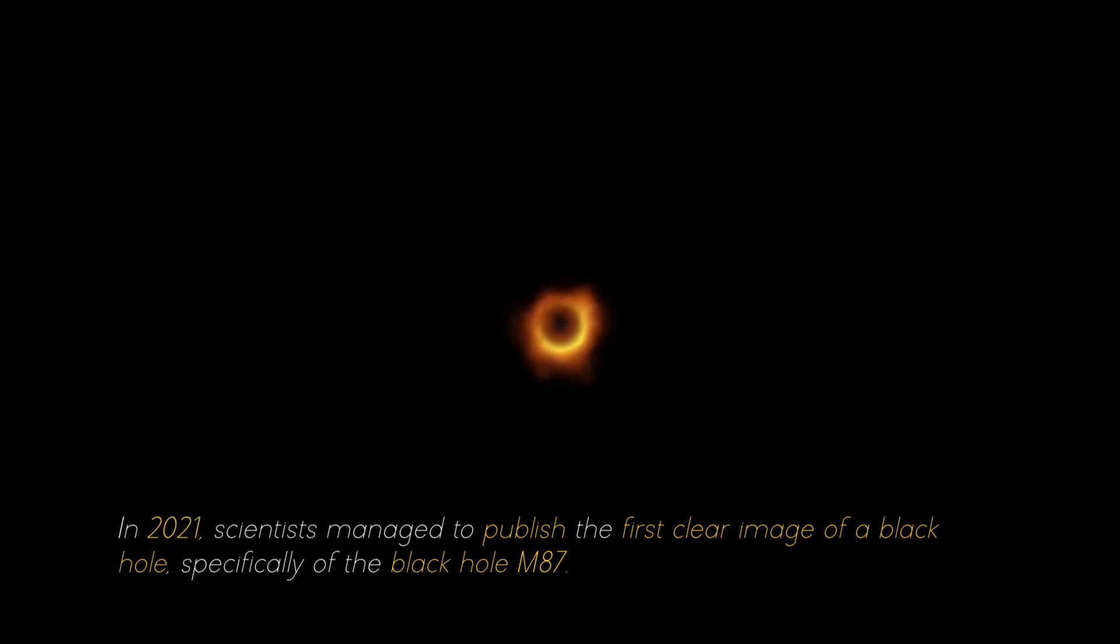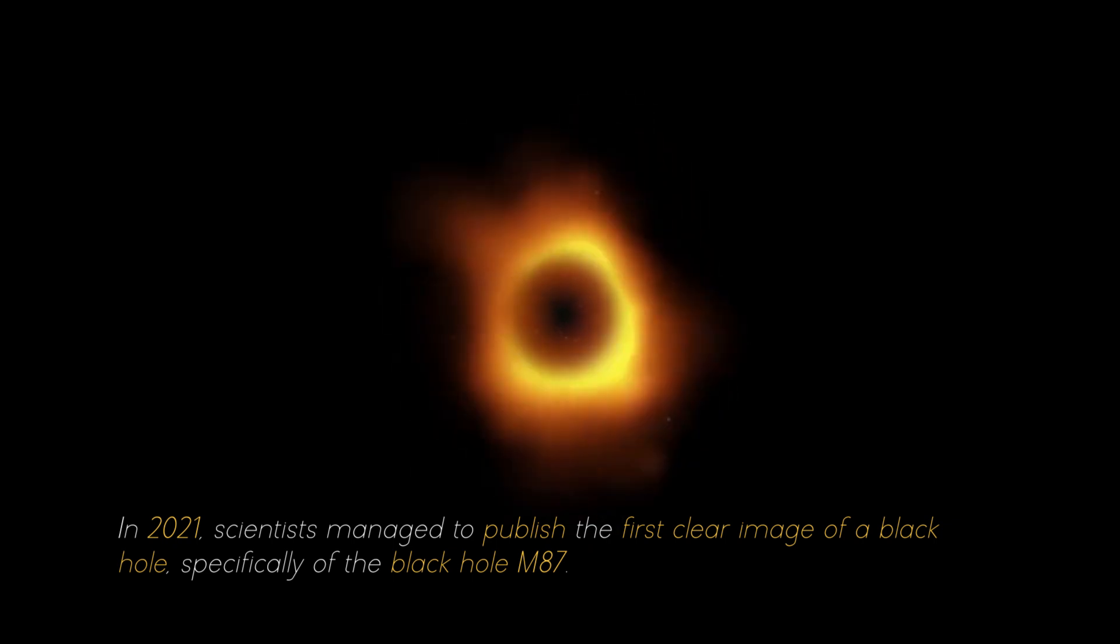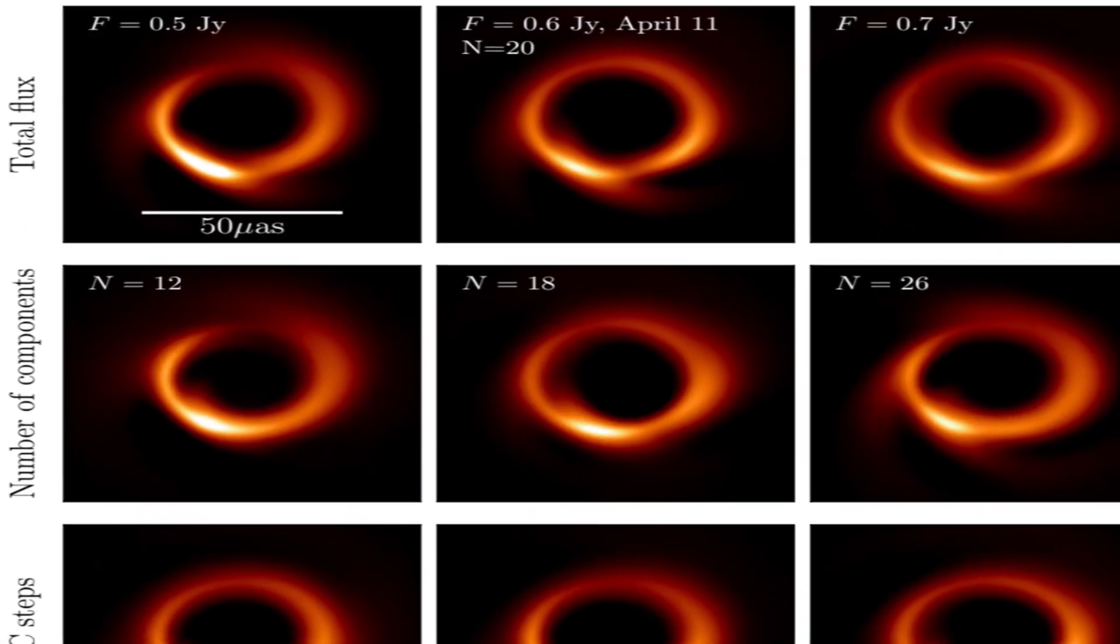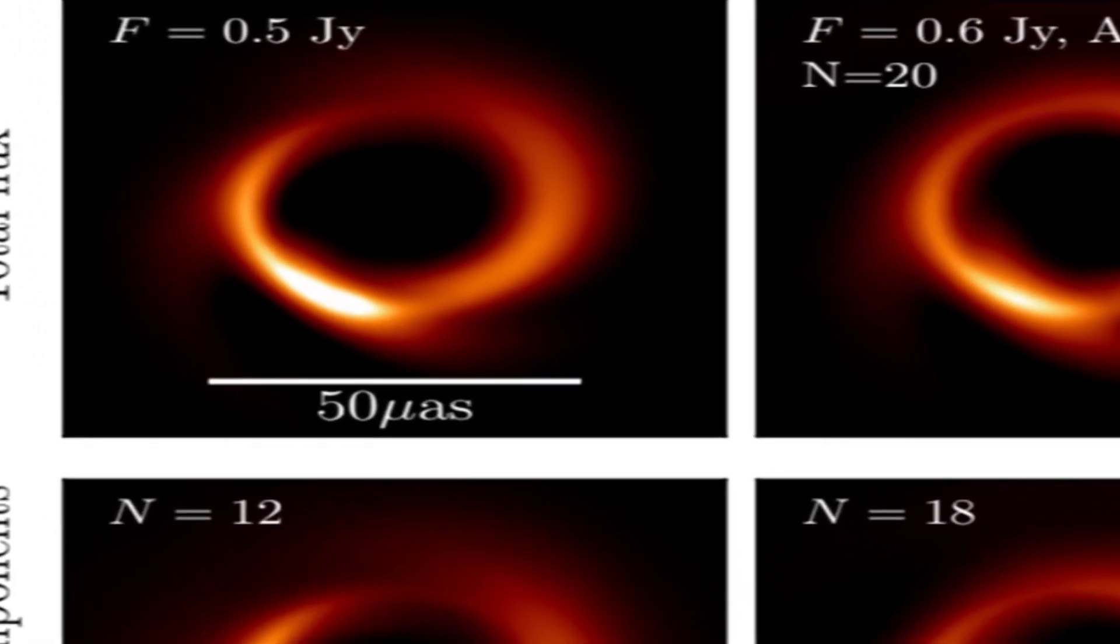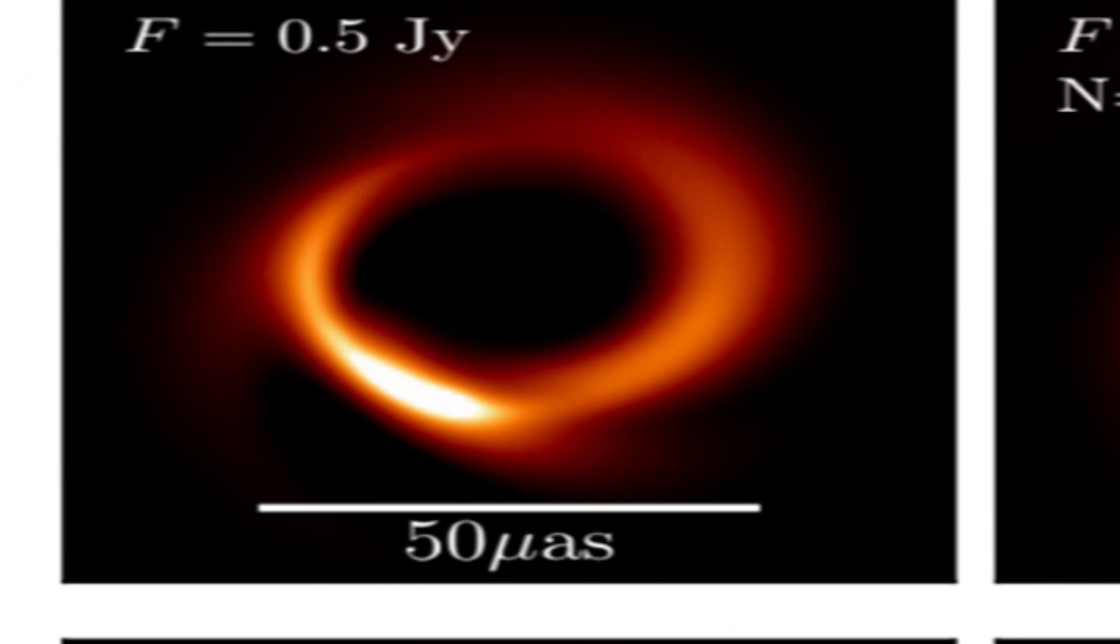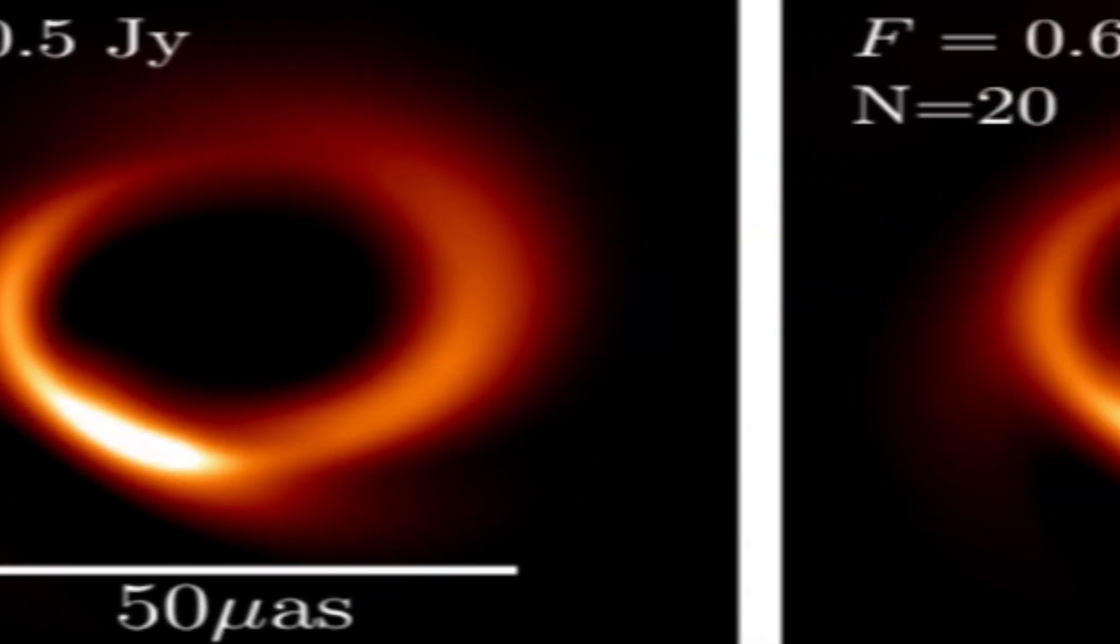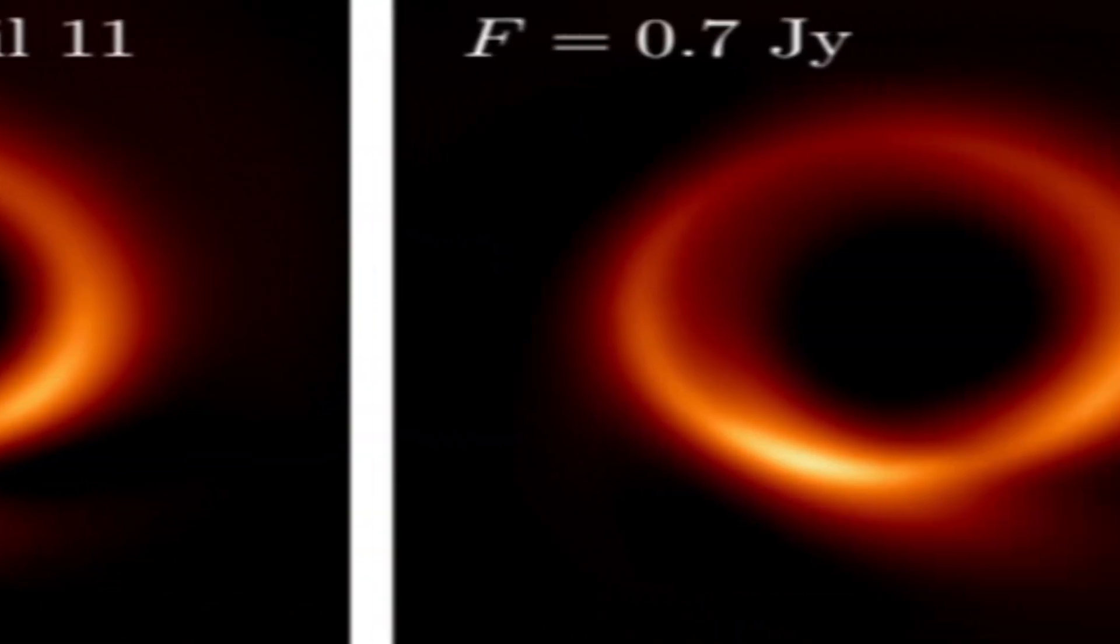In 2021, scientists managed to publish the first clear image of a black hole, specifically of the black hole M87. For several consecutive nights, photographs of the black hole were taken, and with each image researchers collected more evidence about it. It was necessary to combine the individual photographs to obtain a complete image that filled in all the gaps.